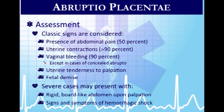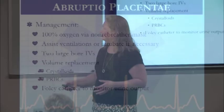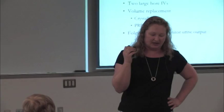Management for abruptio: give oxygen to get as much to the fetus as possible, address airway issues, assist ventilations or intubate if necessary. She needs two large-bore IVs. Start with isotonic crystalloids, then after about two liters switch to blood replacement if needed. Insert a Foley catheter if available during hospital transport.